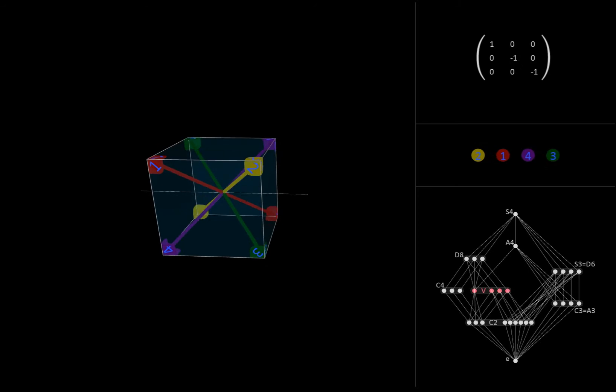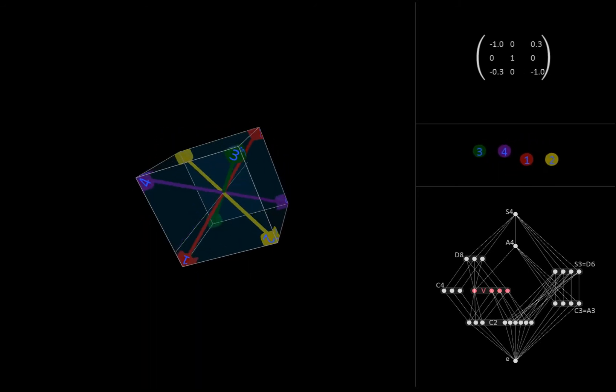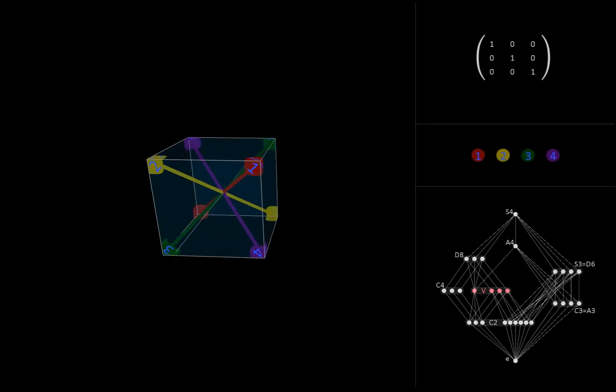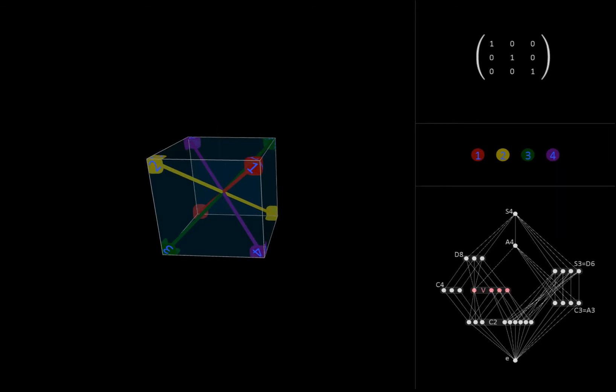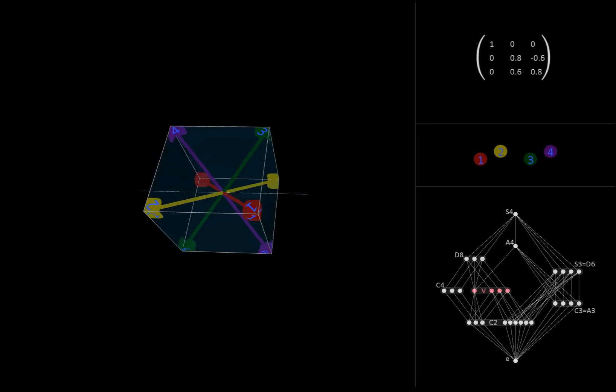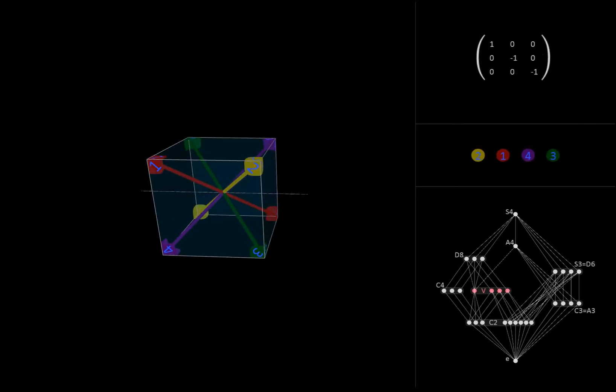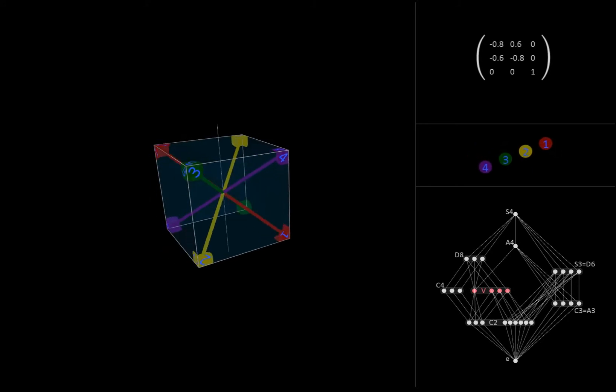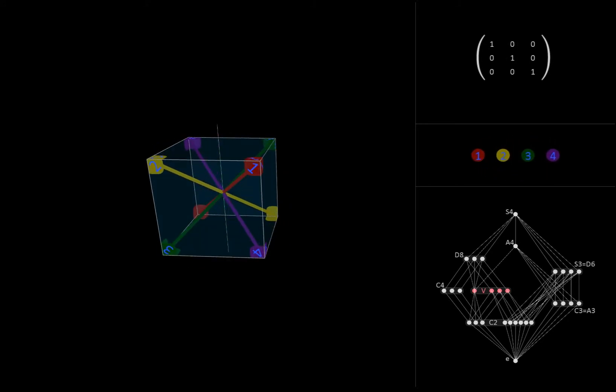the elements of the first Klein group look like this. Notice that each non-trivial element switches two pairs of diagonals at the same time, which means each of them performs an even number of transpositions. Hence, this group is a subgroup of the alternating group A4. Furthermore, since all elements in this Klein group map each of the three axes back to itself, it is a subgroup of all three D8s. Thus, we've found our special Klein group.